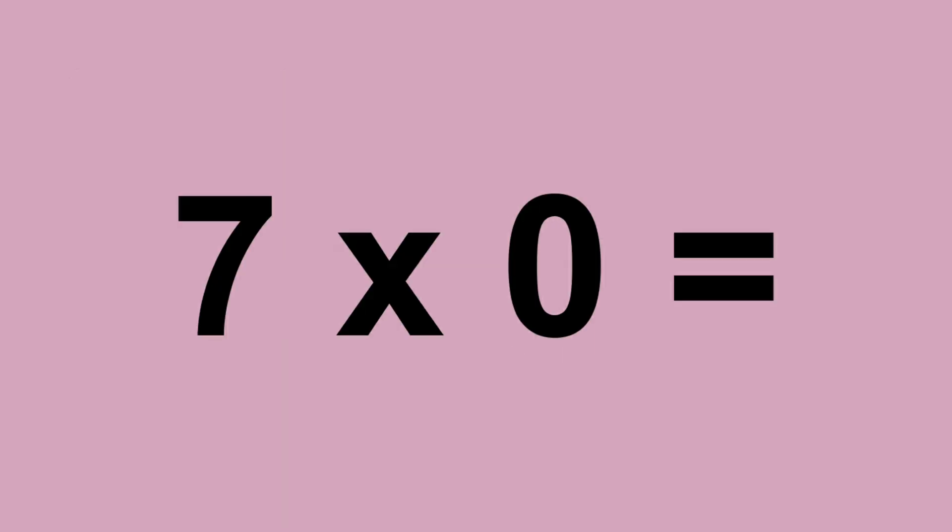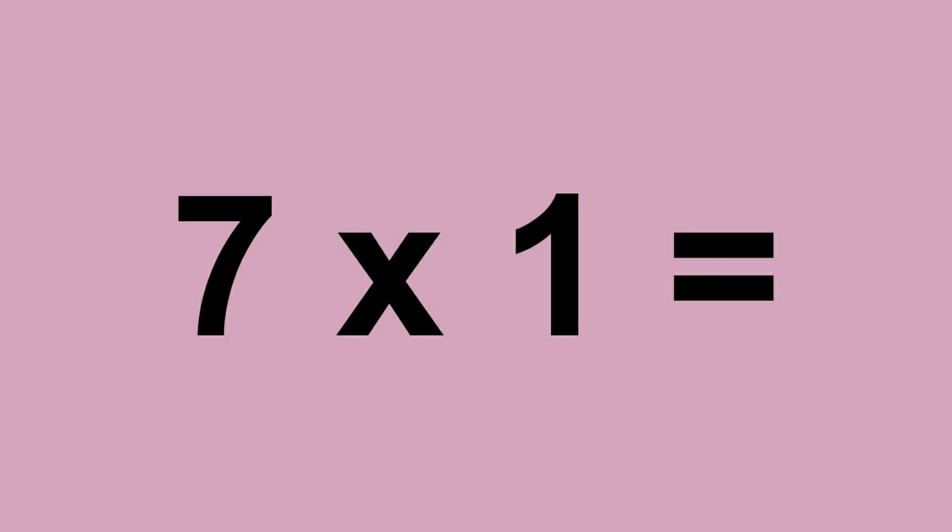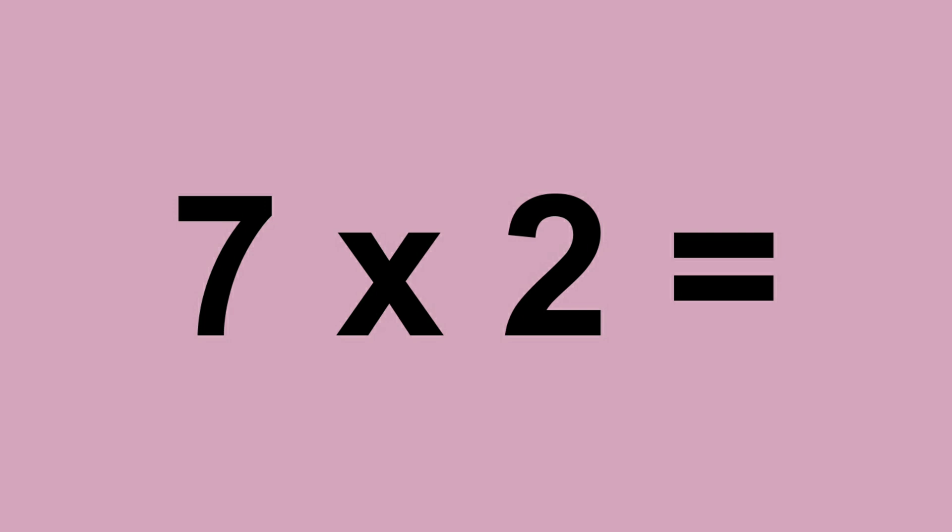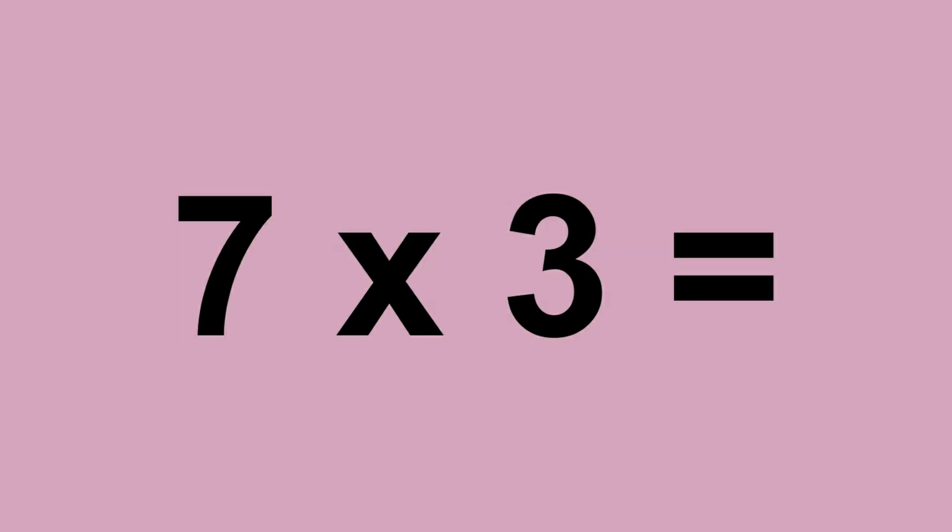7 times 0 equals 0. 7 times 1 equals 7. 7 times 2 equals 14. 7 times 3 equals 21.